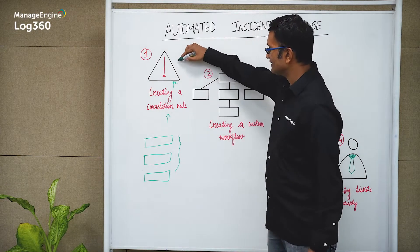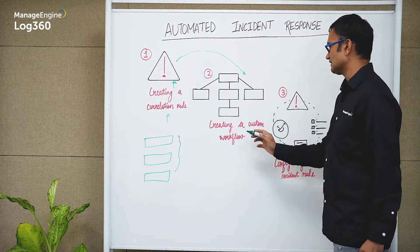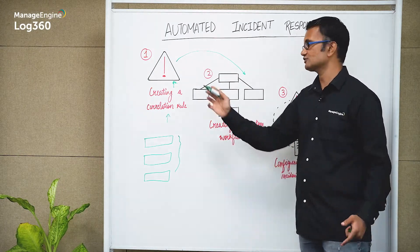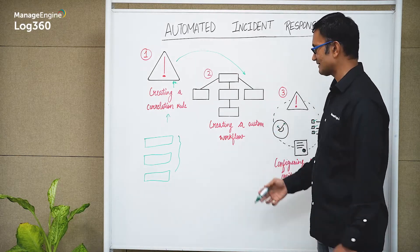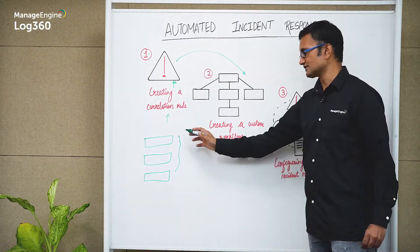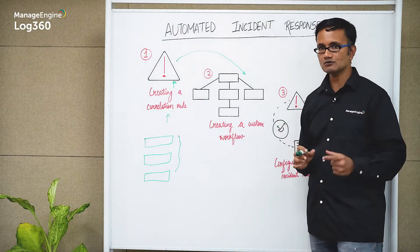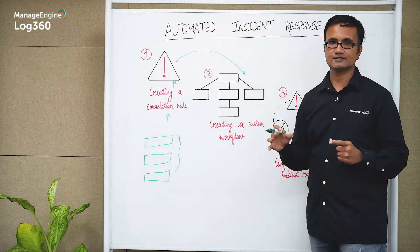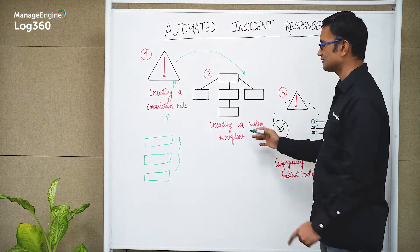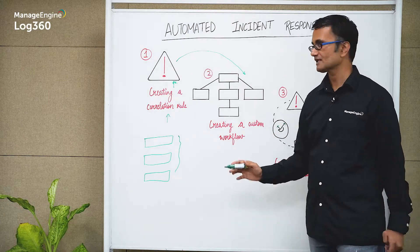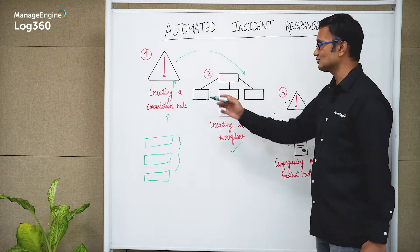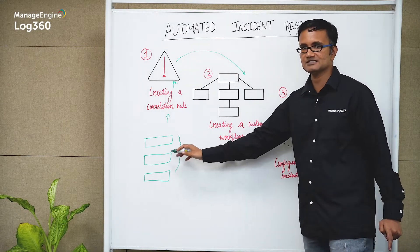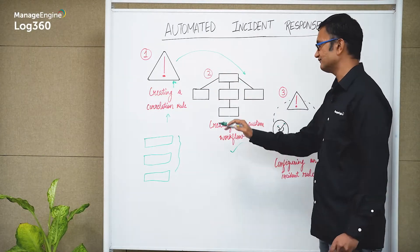From there, what you can do is create a custom workflow. A custom workflow is nothing but a response — your response to this particular alert that has been triggered. For example, the user account associated with this alert could be logged off or disabled. The system that is involved could be shut down. These are things you can configure within a custom workflow, and this workflow will run as soon as the alert is triggered.